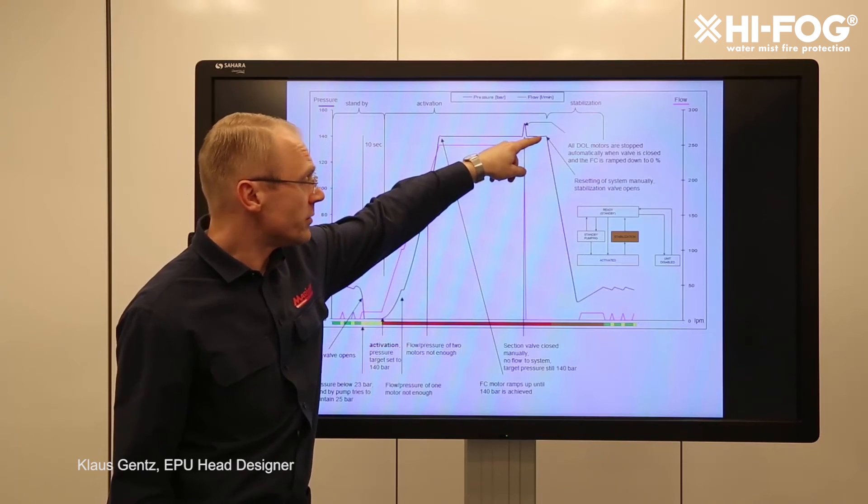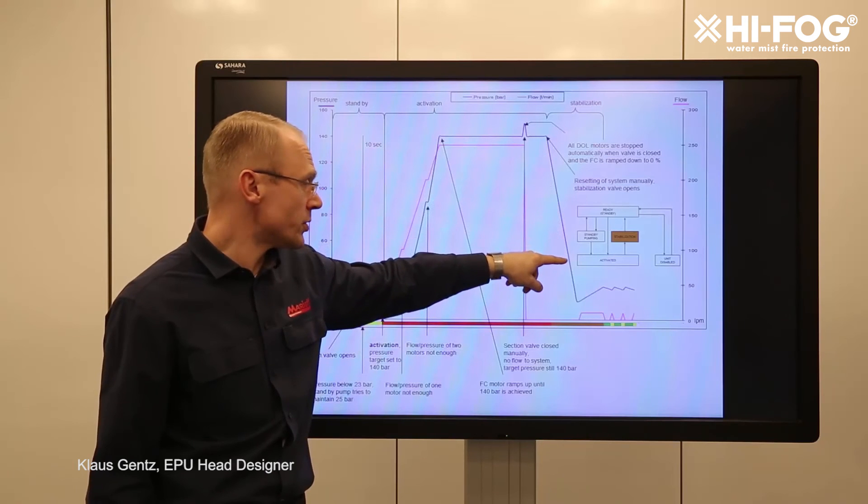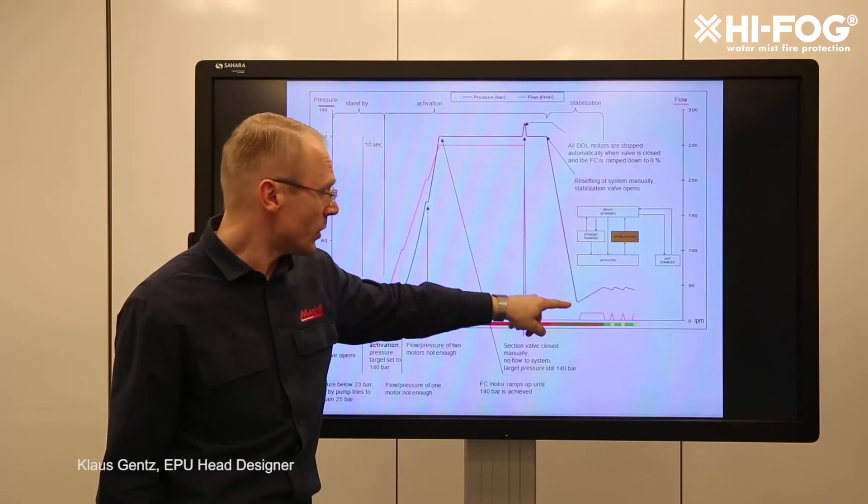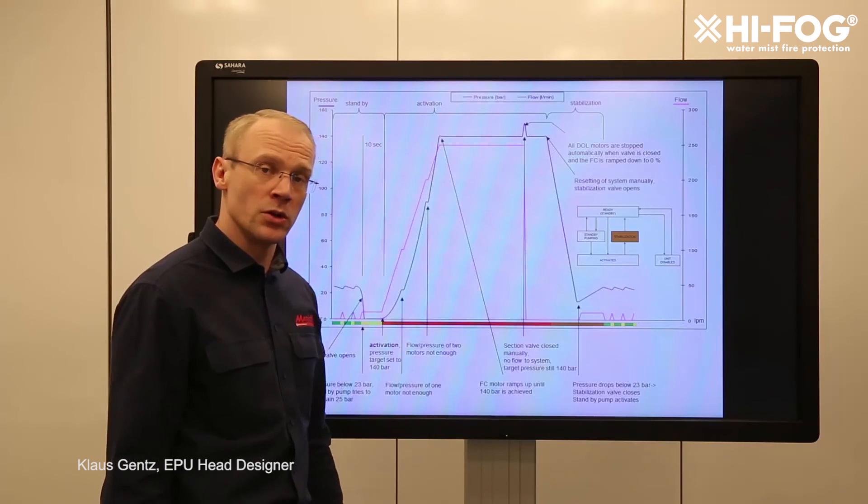The stabilization valve will open in the system which leaks out the excess pressure so the pressure drops and when we come down to 23 bars again the stabilization valve will close.